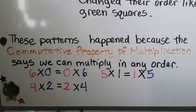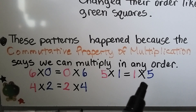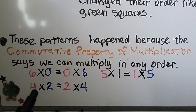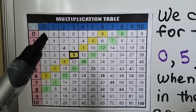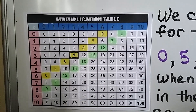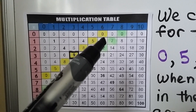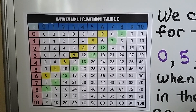These patterns happened because the commutative property of multiplication says we can multiply in any order. 6 times 0 is going to equal 0 times 6. 5 times 1 equals 1 times 5. 4 times 2 equals 2 times 4. Looking at the multiplication table, 6 times 0 equals 0, and 0 times 6 equals 0. It doesn't matter what order the factors are in — the product stays the same.